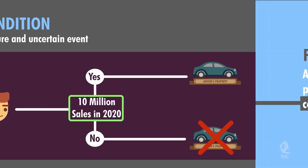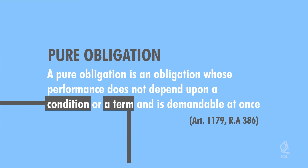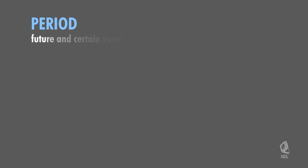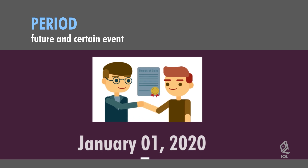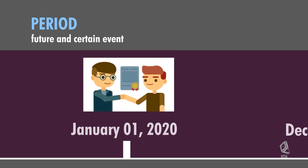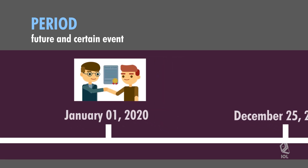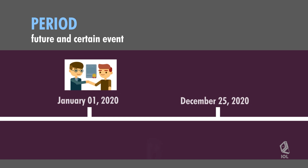On the other hand, a term or period is a future and certain event, and it fixes the efficaciousness of the obligation. For example, on January 1, 2020, Henry promised Anton that he will pay the 1 million peso debt on the 25th of December 2020. The time between January 1, 2020 and December 25, 2020 is a period.